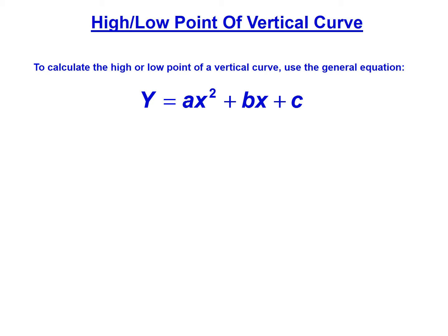To calculate the high or low point of a curve, we're going to start with the general equation for a vertical curve, assuming it's a symmetric parabolic curve: y equals ax squared plus bx plus c.